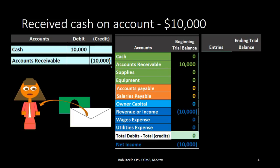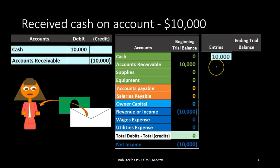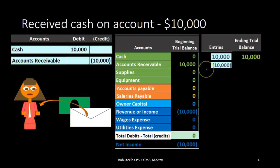If we post that out, cash is going to go from zero up by $10,000 to $10,000, and then accounts receivable is going to go from $10,000 debit down — because we're doing the opposite thing to it by crediting it — to zero.